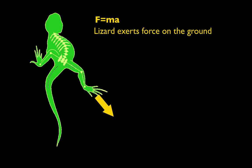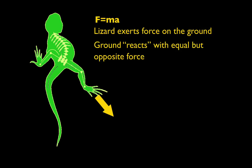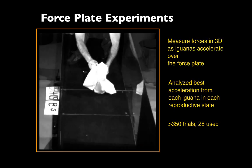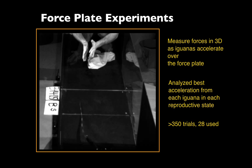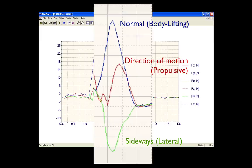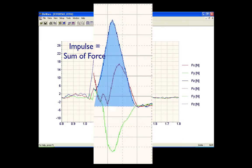One of the things we've been studying is force production in lizards. Lizards exert forces on the ground and the ground reacts with an equal but opposite force, which we can measure with a force plate. X is the direction of motion or propulsive force, Y is lateral, and Z is the normal force — the up and down force. We've done force plate experiments with lizards running across the force plate, and we measured the hind limb impulse — the total force produced under a limb cycle. You will actually do this in lab.